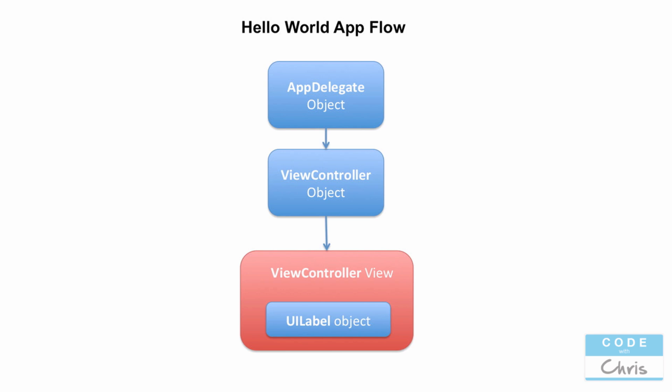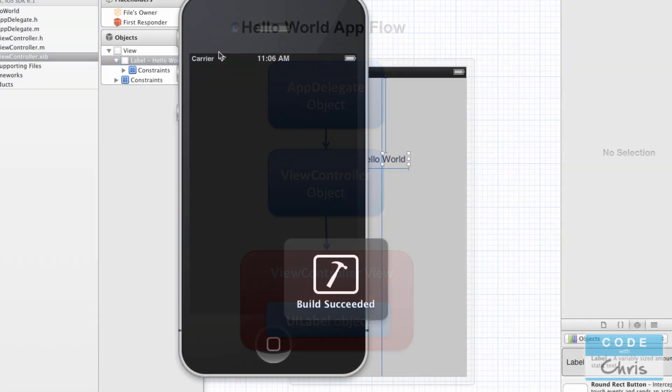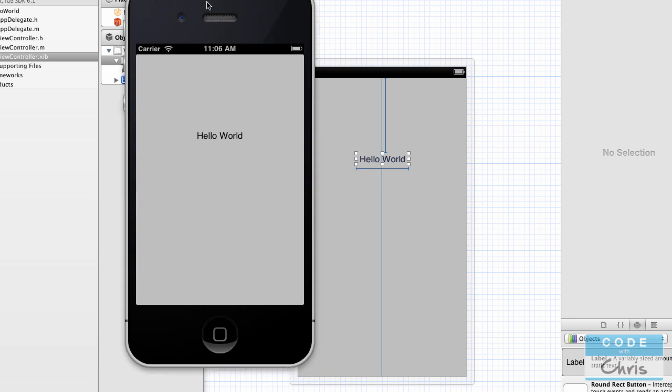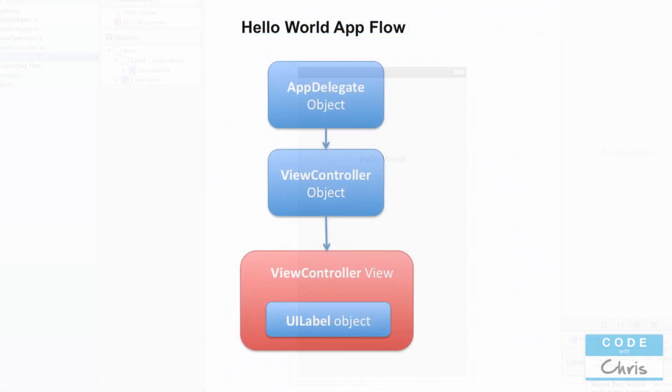That is essentially how you end up with this iPhone app in the iPhone simulator. In the previous tutorial we talked about how objects that are created reside in memory. Looking at this diagram, we have a whole bunch of objects in this app execution, and all of these objects reside in memory.